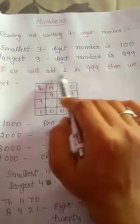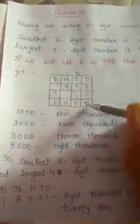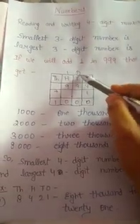So, if we add 1 to 999, then we get 999 plus 1. 9 plus 1 equals 10. 0, carry 1.